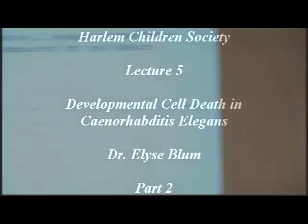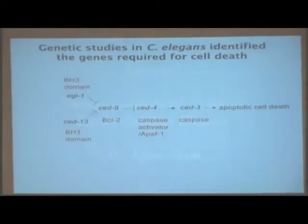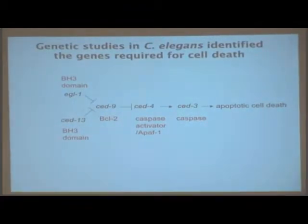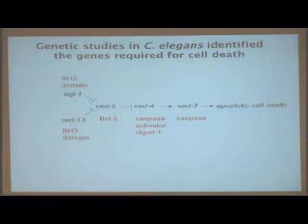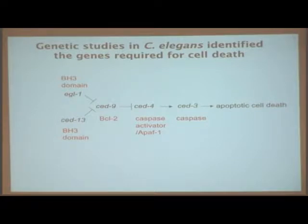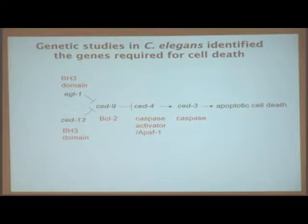As they continued to do genetic studies, looking for mutant types, they were able to identify a core pathway required to carry out cell death. CED-3 is a gene and the protein it makes is called the caspase — it's a protease that chops up other proteins, and it is the most well-known downstream effector required for apoptosis. The other genes required include CED-3, CED-4, CED-9, and two other genes.